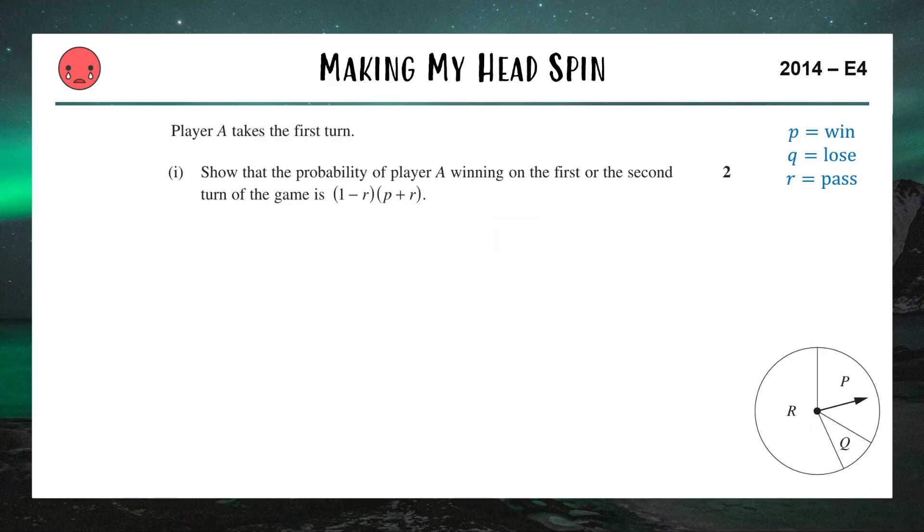Now the actual question, it's a two-parter and here's the first part. Player A is going to go first and we want to show the probability of them winning on the first or second turn of the game is one minus R, P plus R. So I'm going to go first and let's see how many different ways I can win on the first or second turn. Either I can just land on P straight away and then I've won, sucked in, you lose.